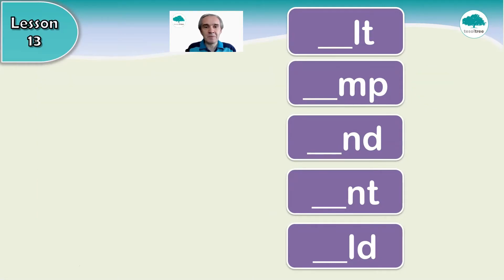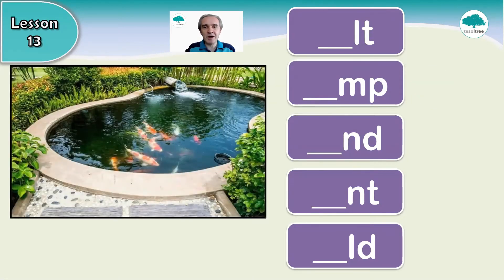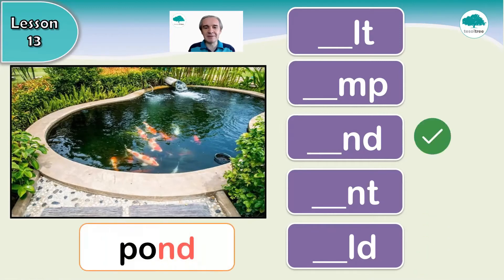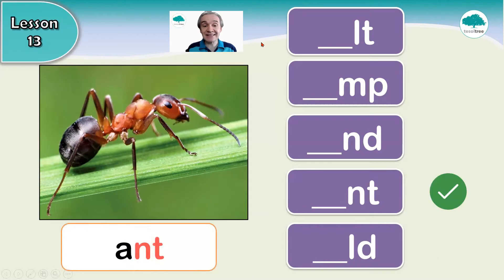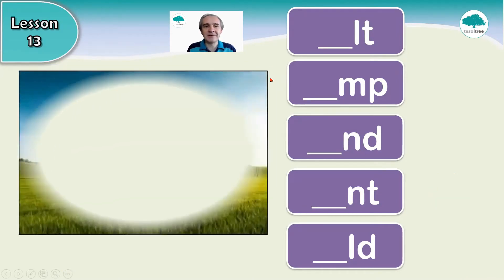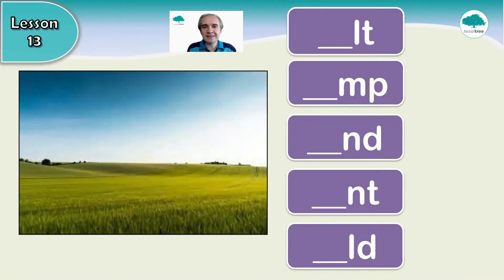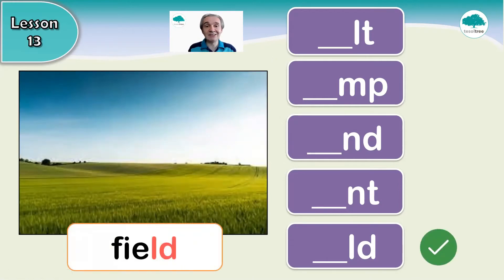Next one — do you remember? What sound is it? It is pond. What sound? ND. Well done. Next one — what is this? What sound? It is an ant, NT. Next one — what is this? Outside — field, the LD sound. Well done.